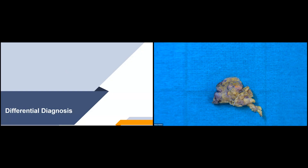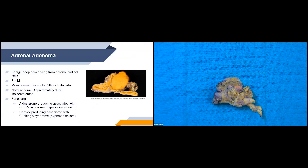Now we'll go through a few differential diagnoses for why we could be getting an adrenalectomy specimen. First, adrenal adenoma — a benign neoplasm arising from adrenal cortical cells. It's the most common adrenal tumor, more common in women versus males and in adults, typically presenting in the fifth to seventh decade. It can be non-functional or functional. Non-functional accounts for about 90% and is most commonly found incidentally on imaging, coined the name incidentaloma.